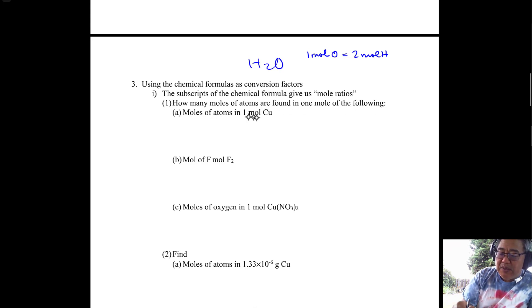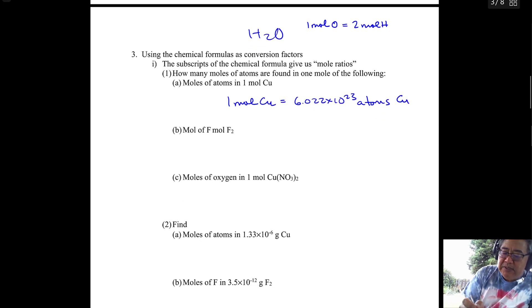It says moles of atoms in one mole of copper. So that's relatively straightforward. One mole of copper is 6.022 times 10 to the 23rd atoms of copper. And that's just from the definition of Avogadro's number.